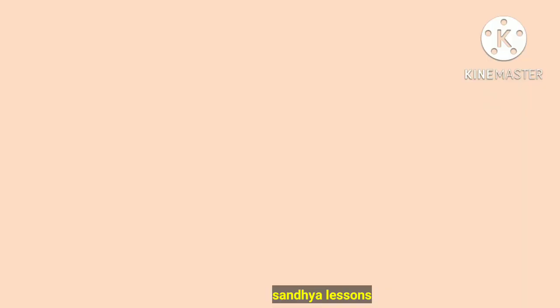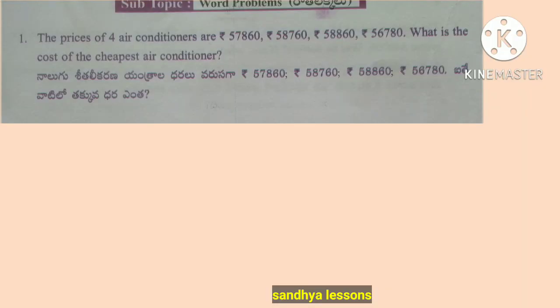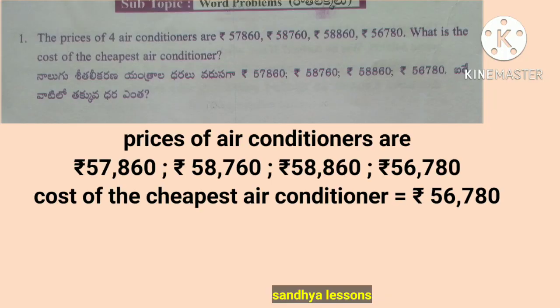Worksheet 13. First problem: the prices of four air conditioners are 57,860 rupees; 58,760 rupees; 58,860 rupees; and 56,780 rupees. What is the cost of the cheapest air conditioner? Solution: the cost of the cheapest air conditioner is 56,780 rupees.